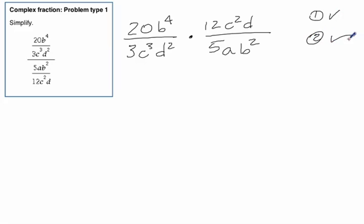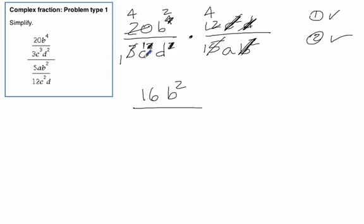Step two is simplify. So the 5 goes into 20 four times, the 3 goes into 12 four times. We've got these c squareds take away two of those, we're just left with one c. We've got b squared here takes two of those away. One of these d's takes away one of those. And we're left with 16 b squared all over c d a. That's all there is to it.